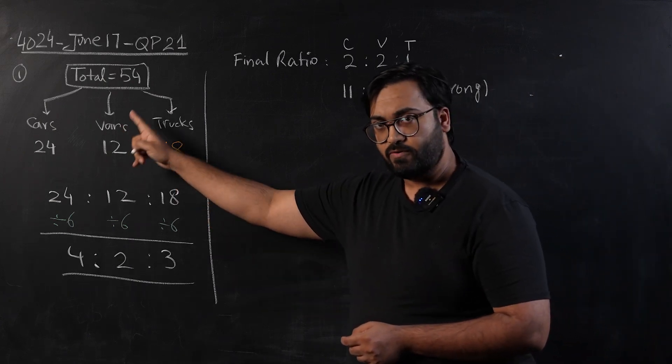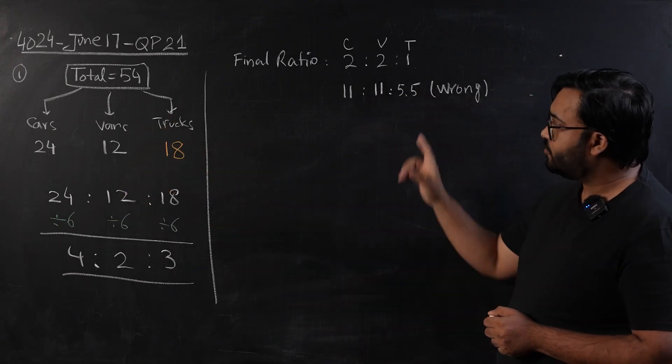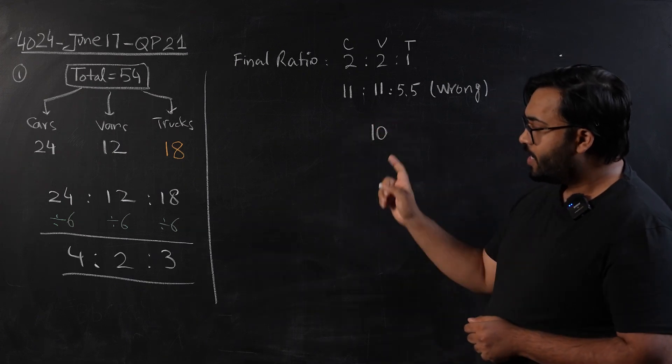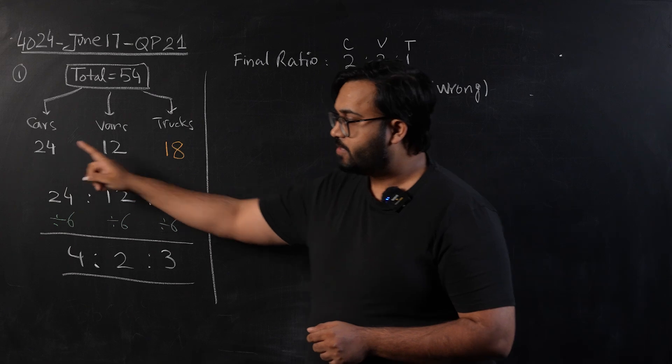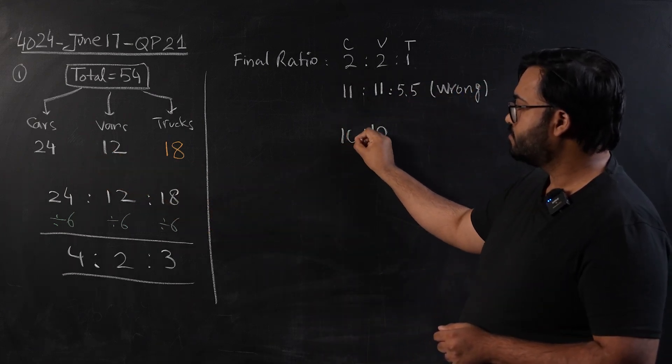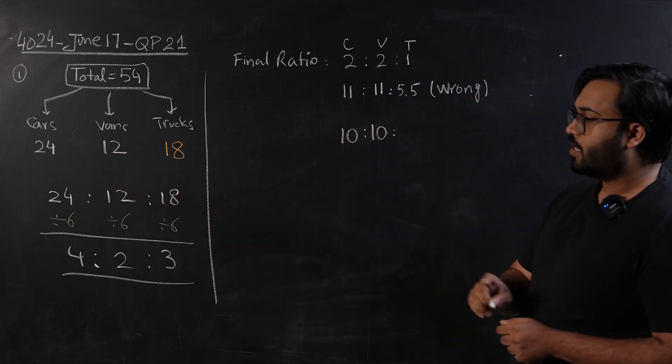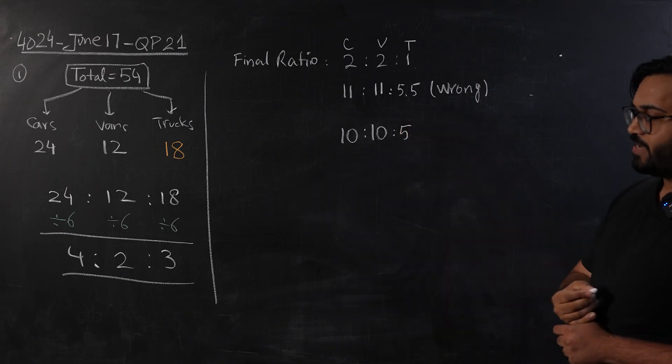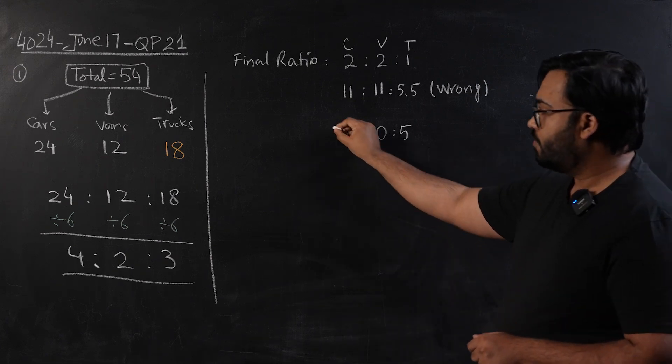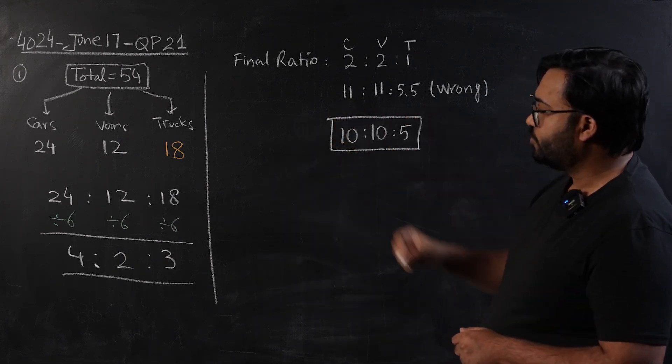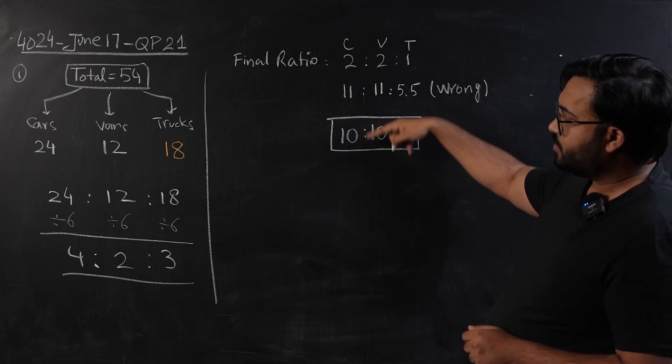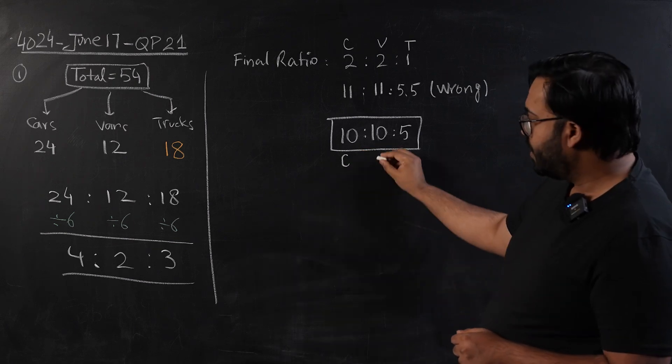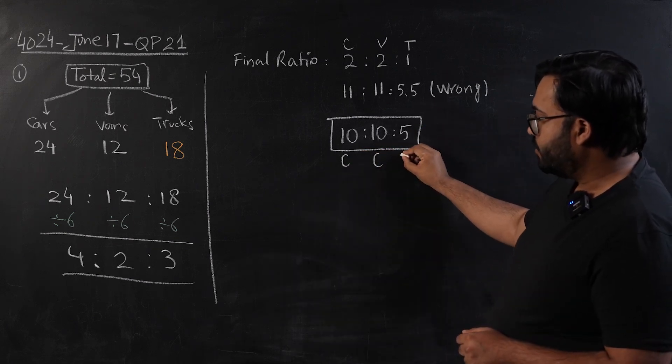Let's move this number once more down. Instead of 12 to 11 vans, let's sell 2 of the vans, and this number will become 10. If this number becomes 10, cars will also be 10, and half of them would be trucks, so 10 divided by 2 gives us 5. This is a ratio which is going to give us 2 ratio 2 ratio 1. That means he has remaining 10 cars, 10 vans, and 5 trucks.